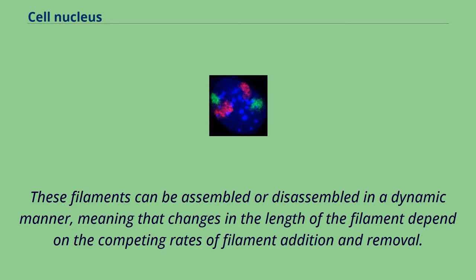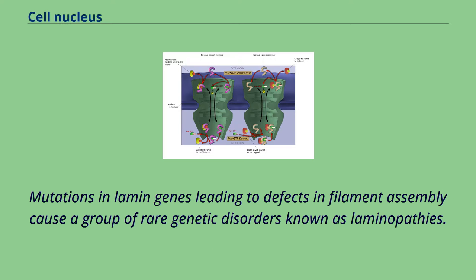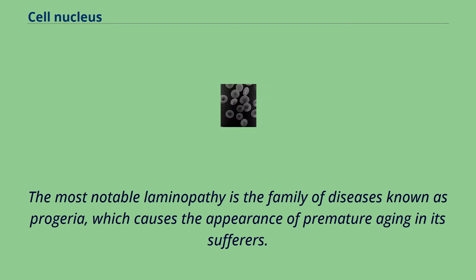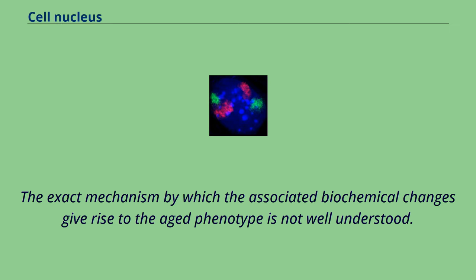Mutations in lamin genes leading to defects in filament assembly cause a group of rare genetic disorders known as laminopathies. The most notable laminopathy is the family of diseases known as progeria, which causes the appearance of premature aging in its sufferers. The exact mechanism by which the associated biochemical changes give rise to the aged phenotype is not well understood.